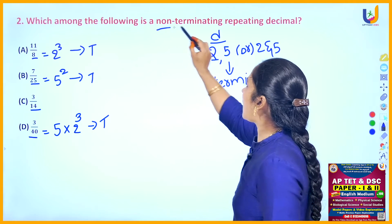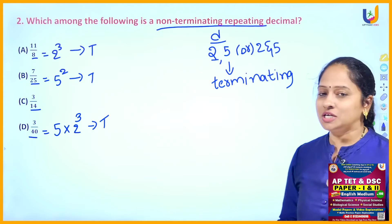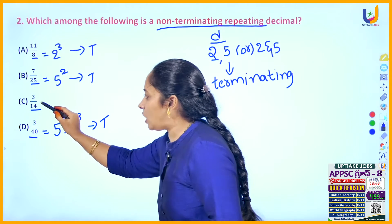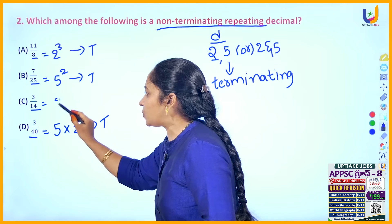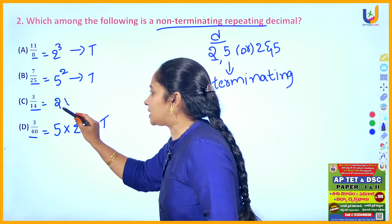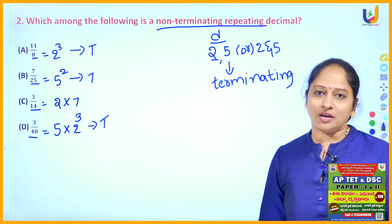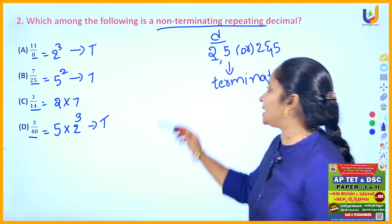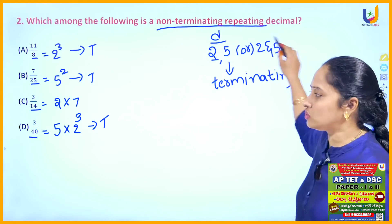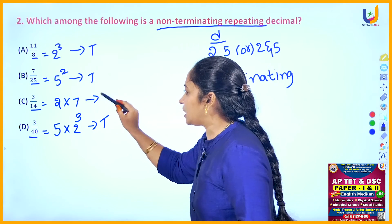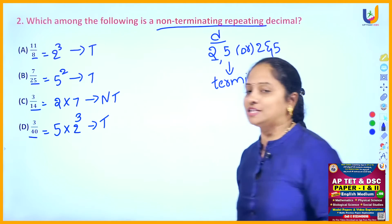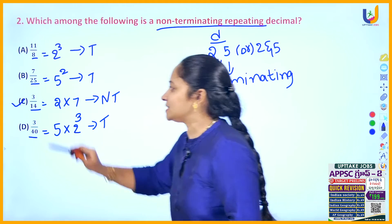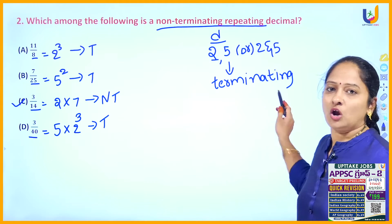The question asks you to identify the non-terminating repeating decimal. Option 3 has denominator 14, which we can write as 2 into 7. Along with 2 there is a factor of 7, so by this rule we can say this option is a non-terminating repeating decimal. You can choose answer option C.